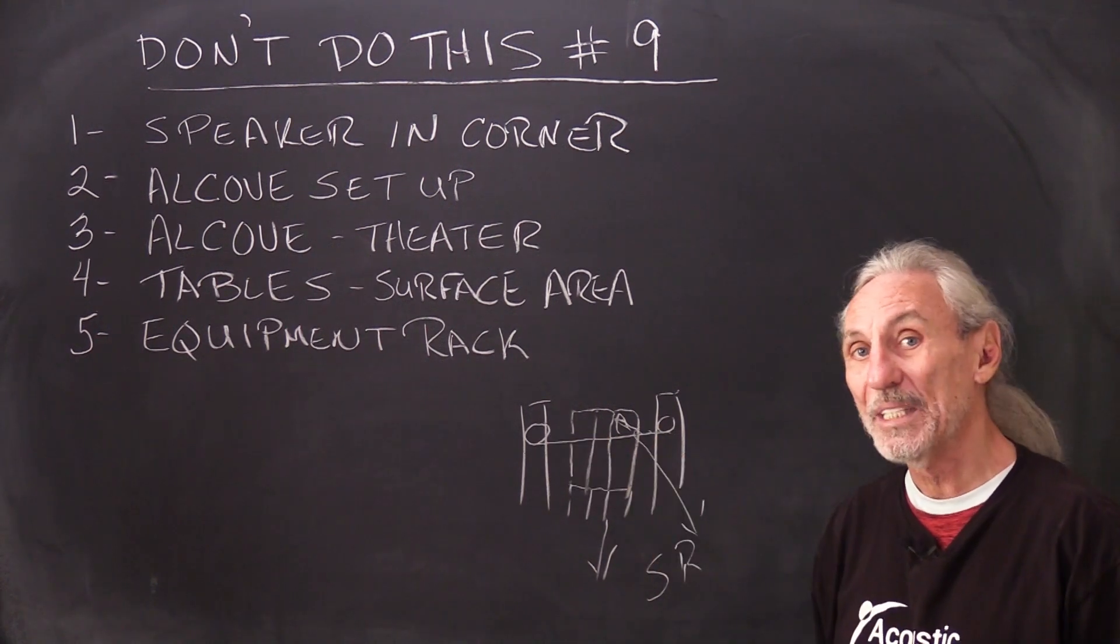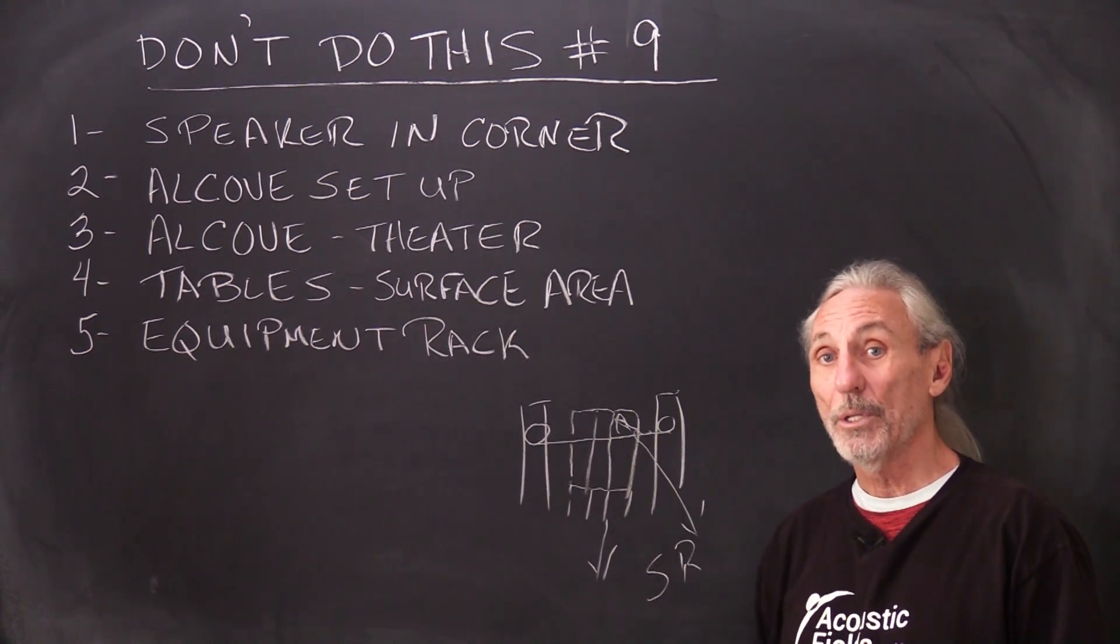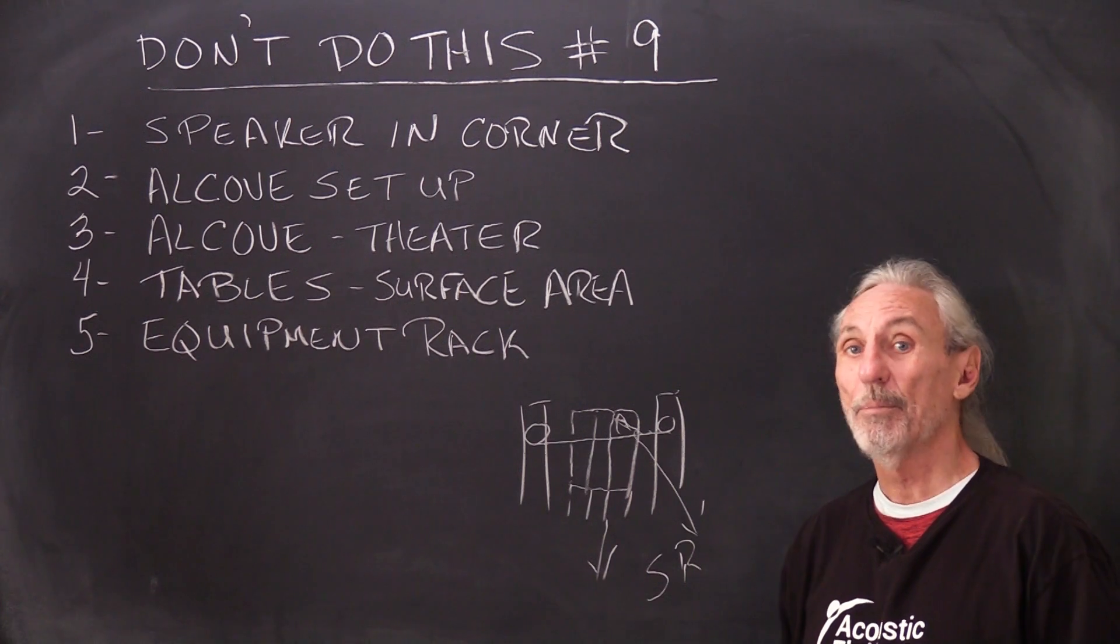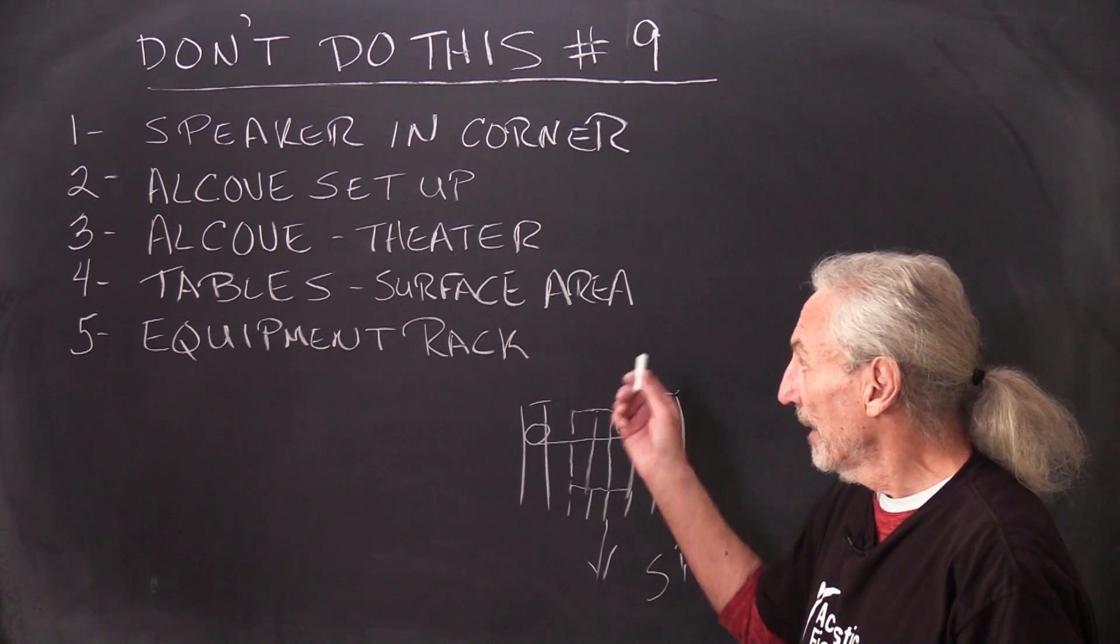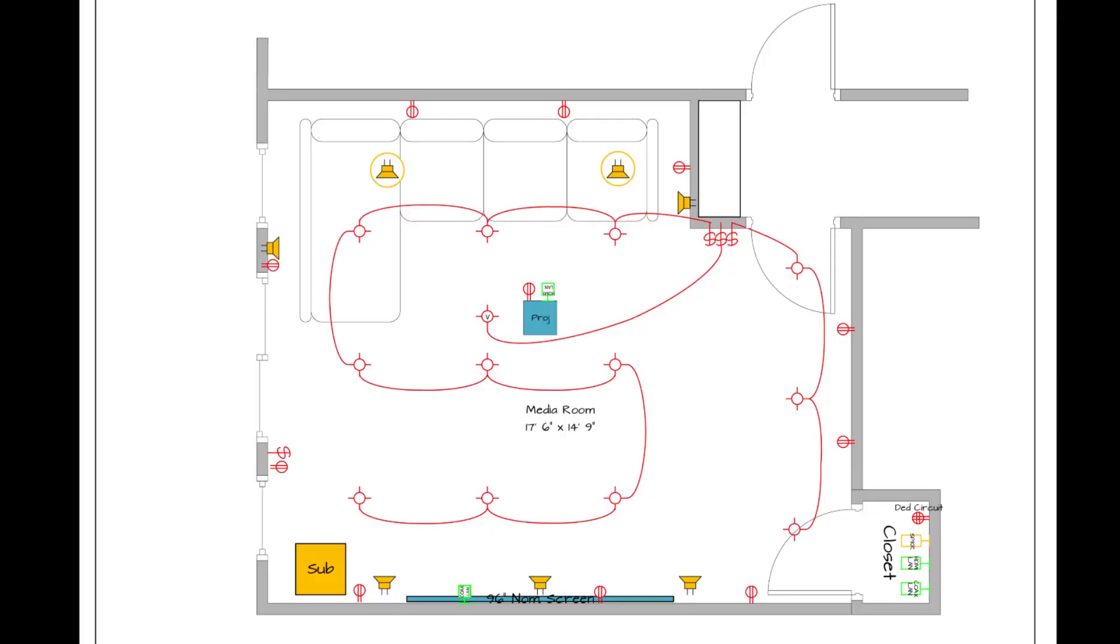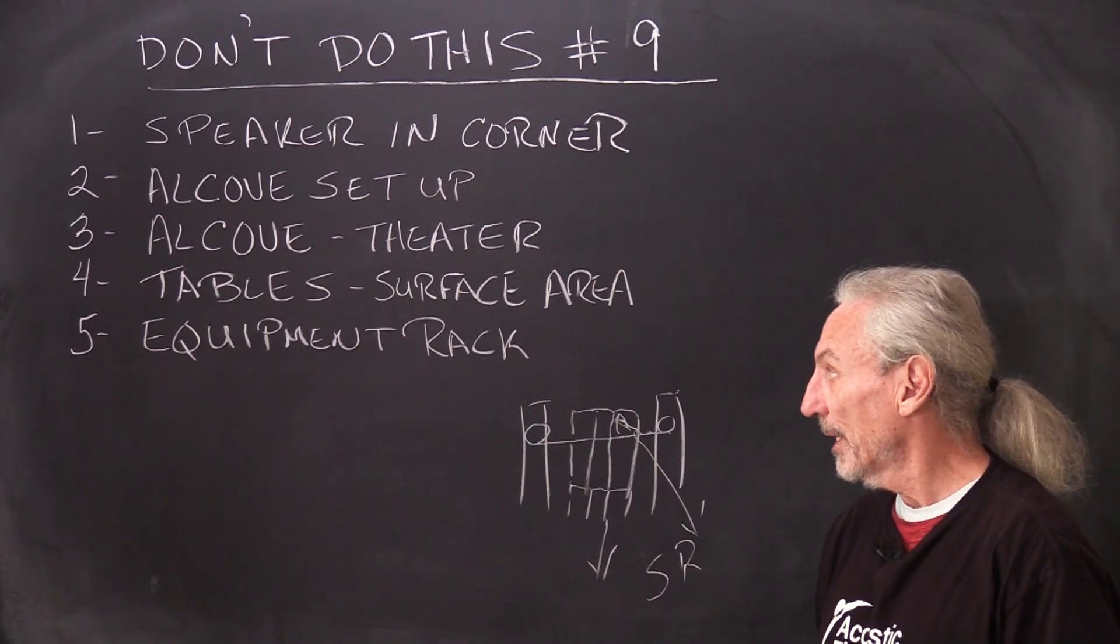So you're creating what we call spurious reflections, and we don't need that. We need these two speakers working together, and they'll work together if you just set them up properly. They're designed to do that. Next one, we have a similar situation - gear too high in this alcove, too much between the speakers again, interfering with this sound field that we just discussed. So be real careful with your setup.